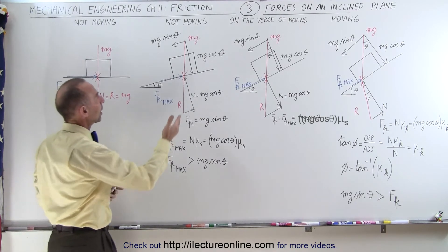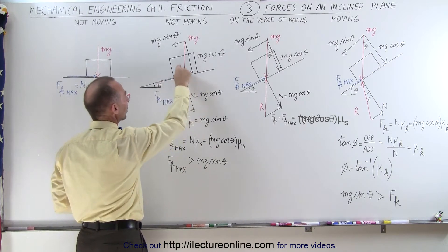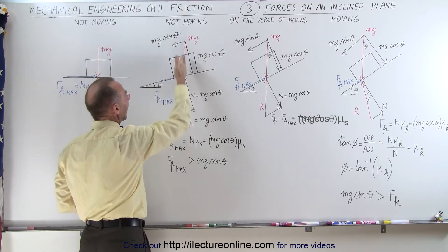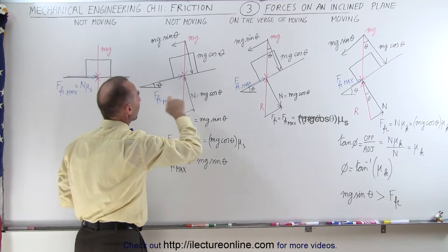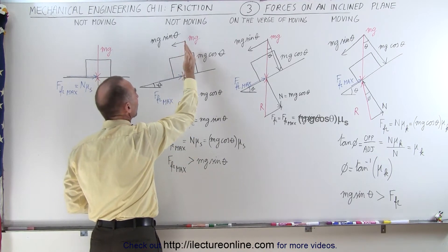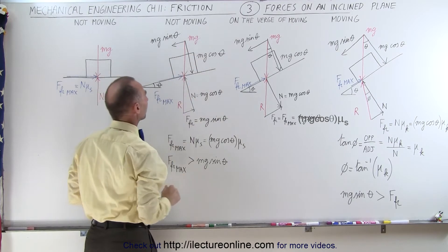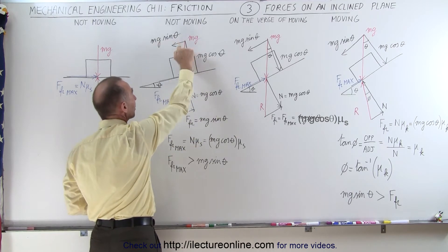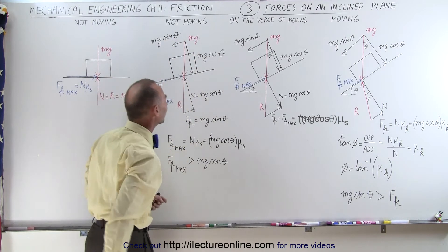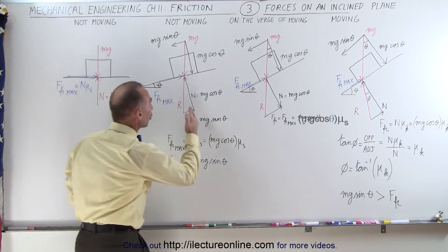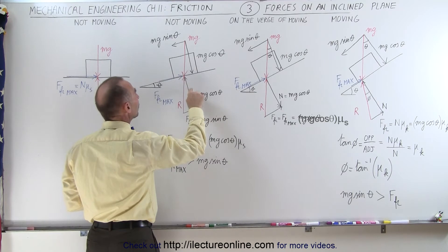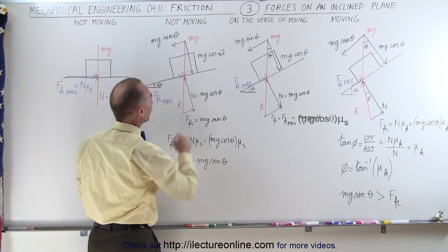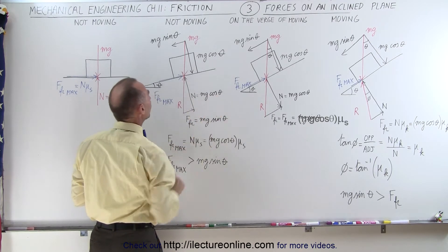Now what happens when we put the block on an inclined plane and there is friction between the block and the surface? The angle here is relatively small. We can see that the weight of the block acts straight down toward the center of the earth, but we can divide it into perpendicular and parallel components relative to the surface. The perpendicular component is the weight times cosine of the angle, and the parallel component is the weight times sine of the angle. The normal force pushing against the block is directed perpendicular to the surface and is equal to mg cosine theta.